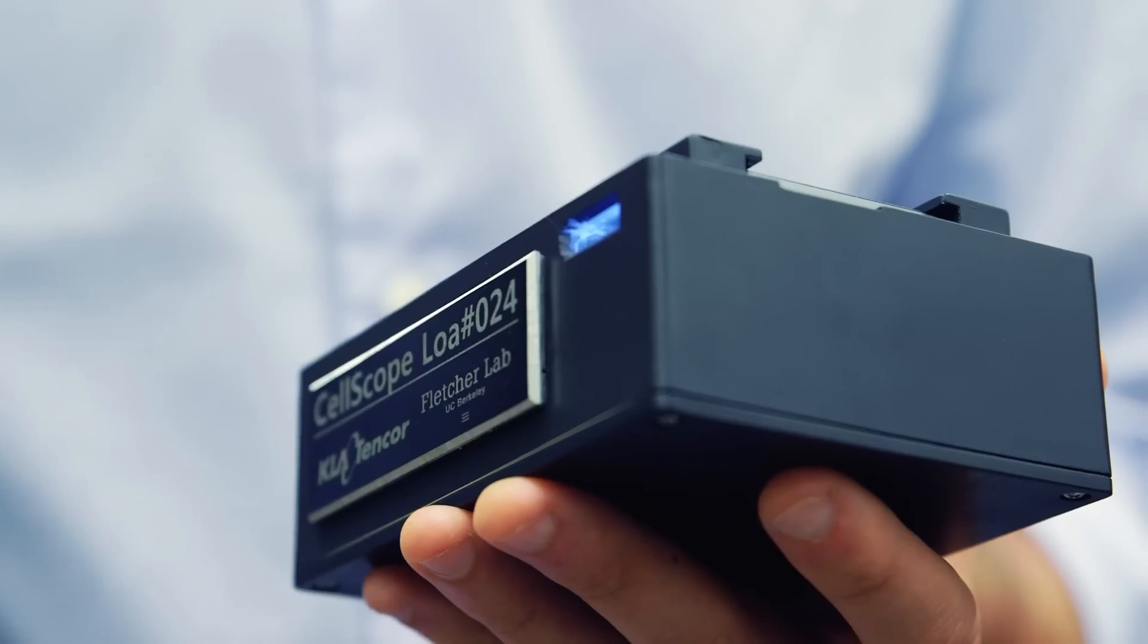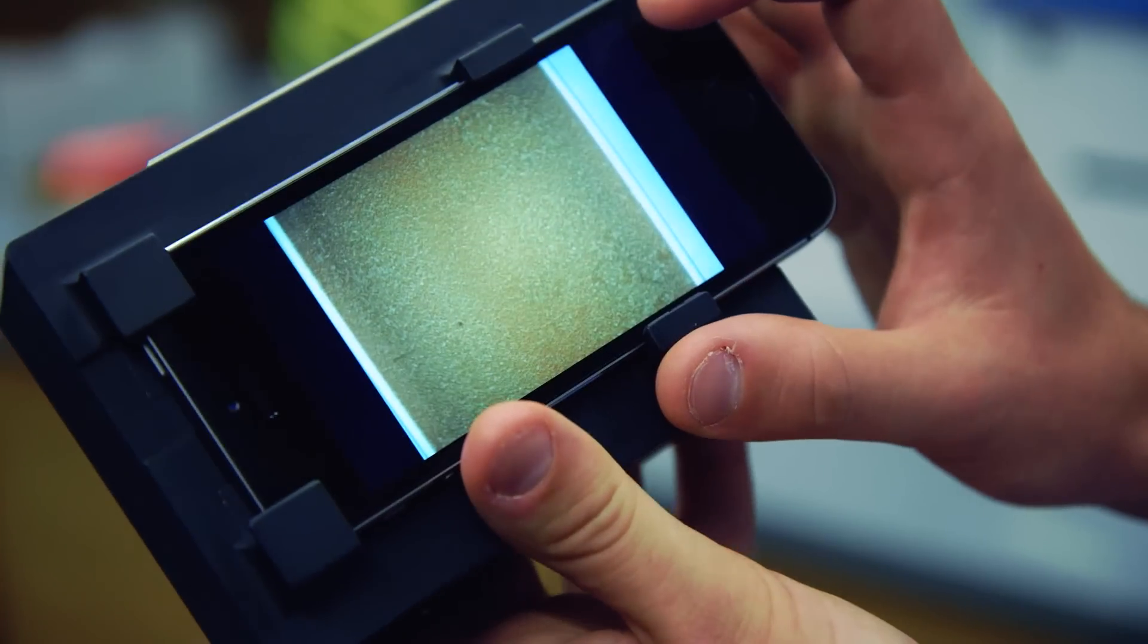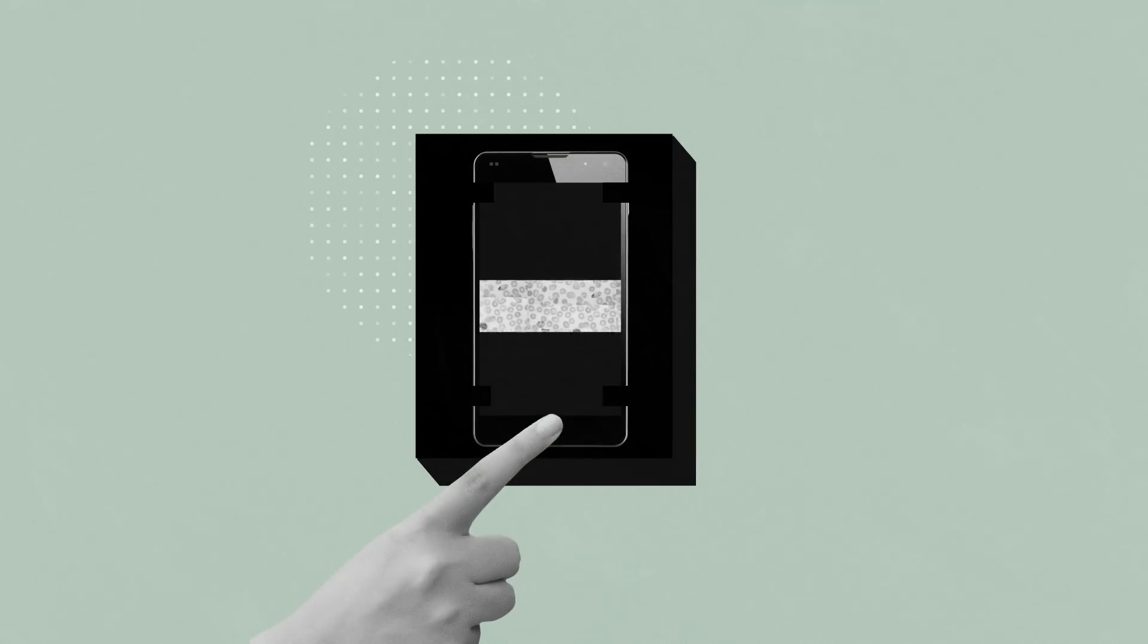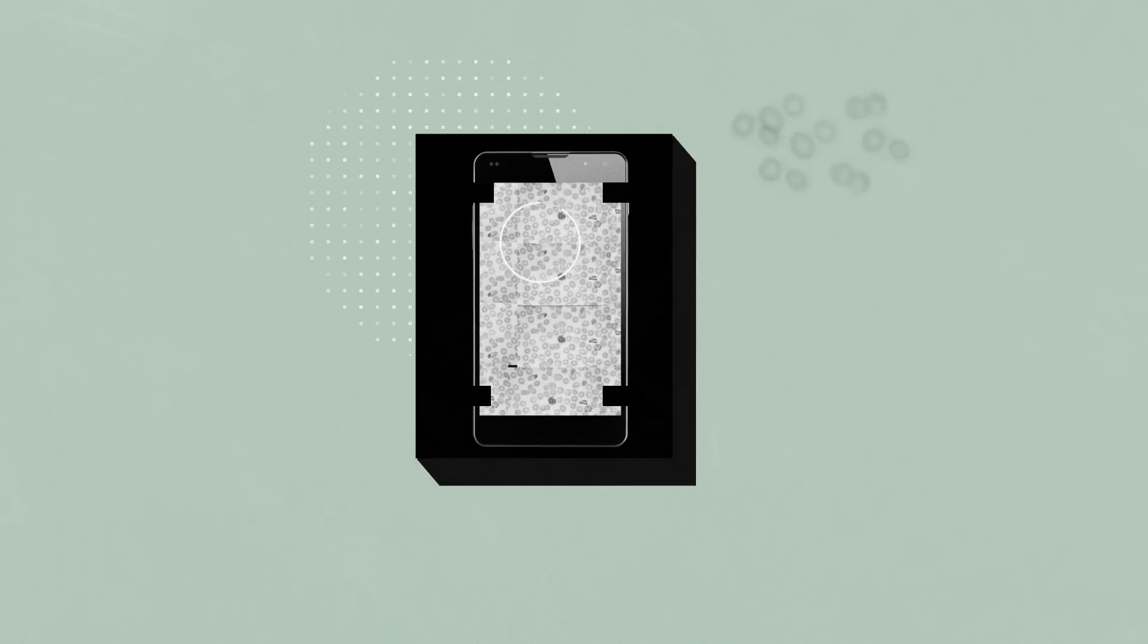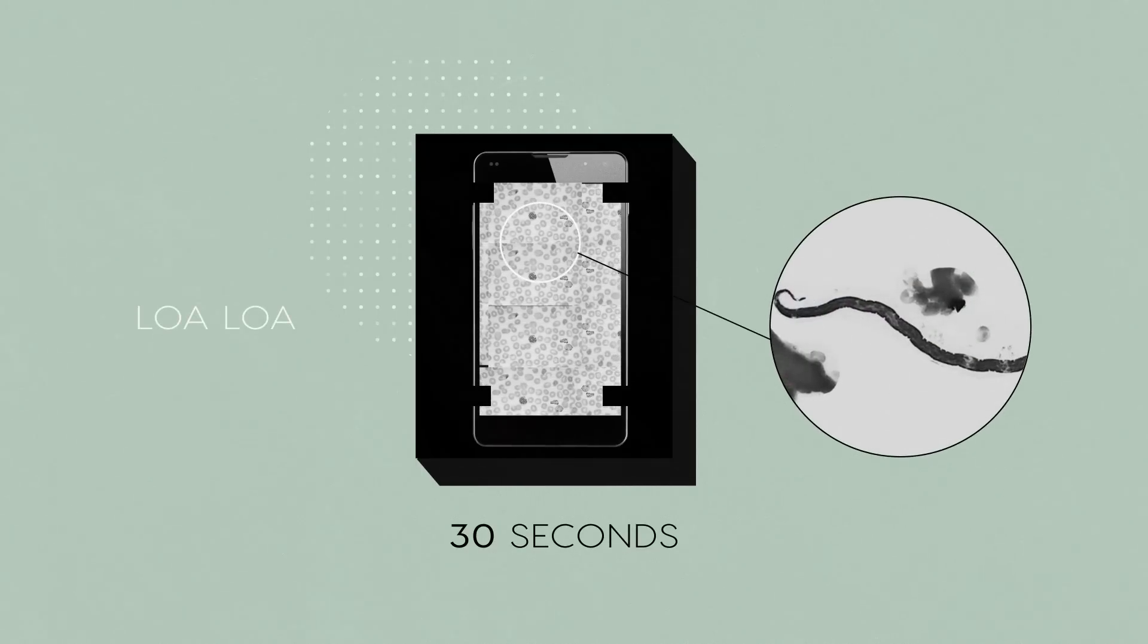During the test, the device captures five-second video clips as it moves across the magnified sample. CellScope software then scans each clip for irregular movement caused by parasites in the blood. Unlike traditional microscopic analysis, which can take days or even weeks, the CellScope test takes just 30 seconds, meaning that if the software detects a parasite, the patient can be diagnosed and given treatment almost immediately.